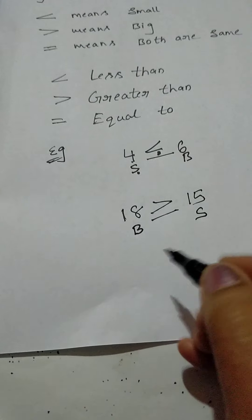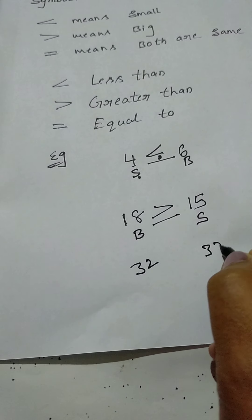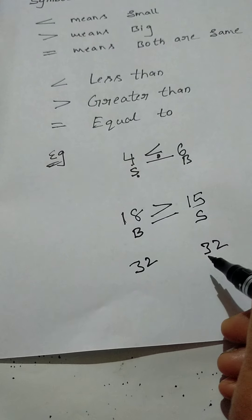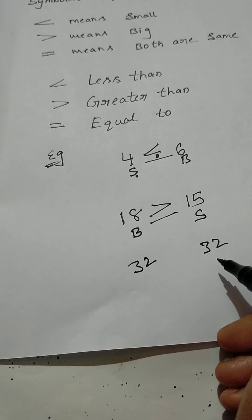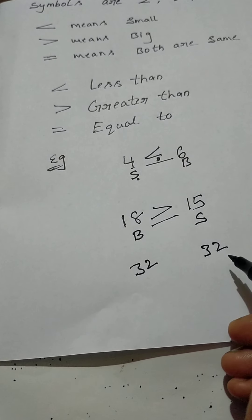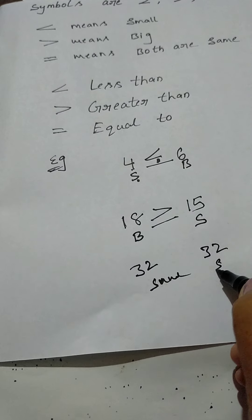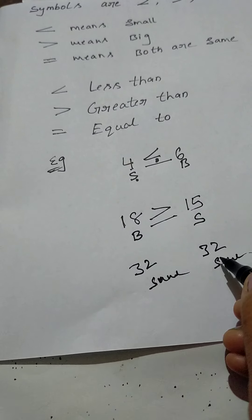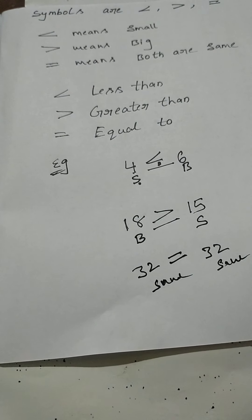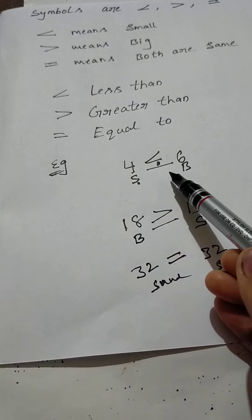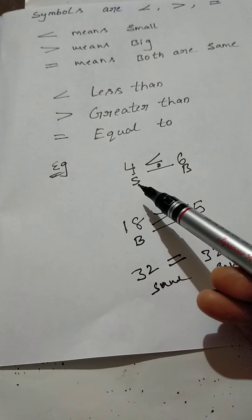Next, the third one — what is this? Equal to. Equal to means both are the same. Take the number 32 and also 32. Compare these two numbers — which one is biggest, which one is smallest? Both are the same. It is 32 and 32, the same. So in this situation, use equal to.